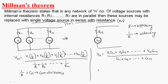Similarly, the series resistance Rm is given by 1 divided by (G1 + G2 + ... + Gn).